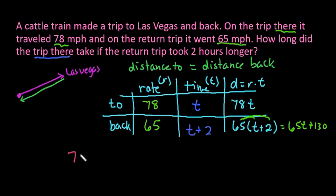So our distance to is 78T. This distance is equal to the distance back. So we have 65T plus 130.